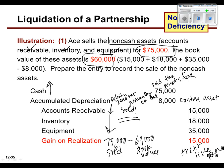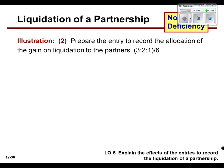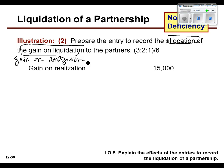That's step one. For step two, we need to record the allocation of the gain on realization. The $15,000 gain is wiped out and given to the three partners. They have a 3-2-1 split, so you add those up — it's out of six. So it's three-sixths, two-sixths, and one-sixth.